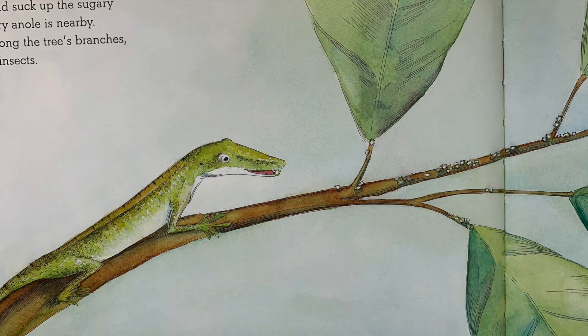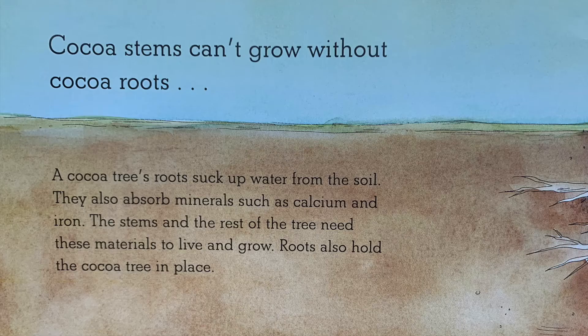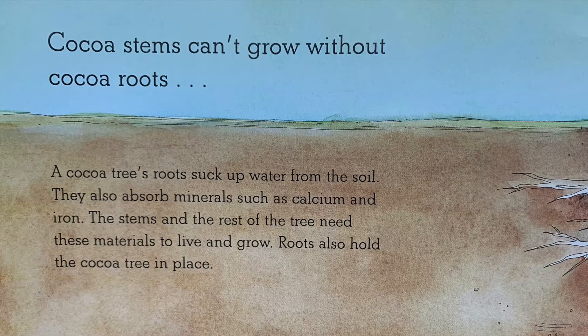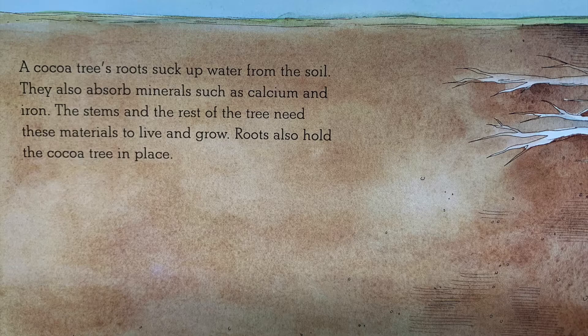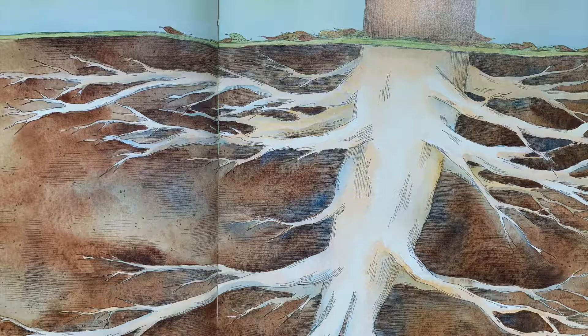Cocoa stems can't grow without cocoa roots. A cocoa tree's roots suck up water from the soil. They also absorb minerals such as calcium and iron. The stems and the rest of the tree need these materials to live and grow. Roots also hold the cocoa tree in place.